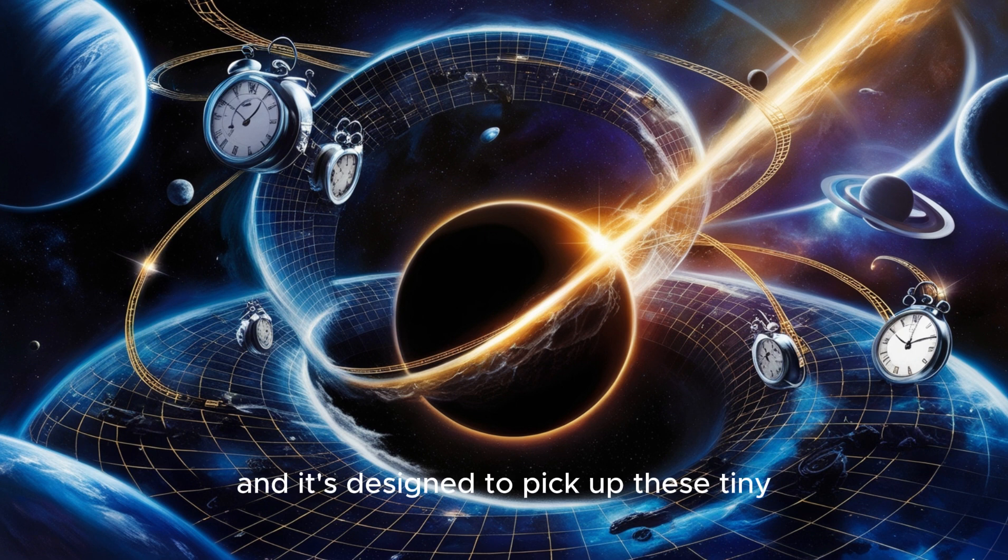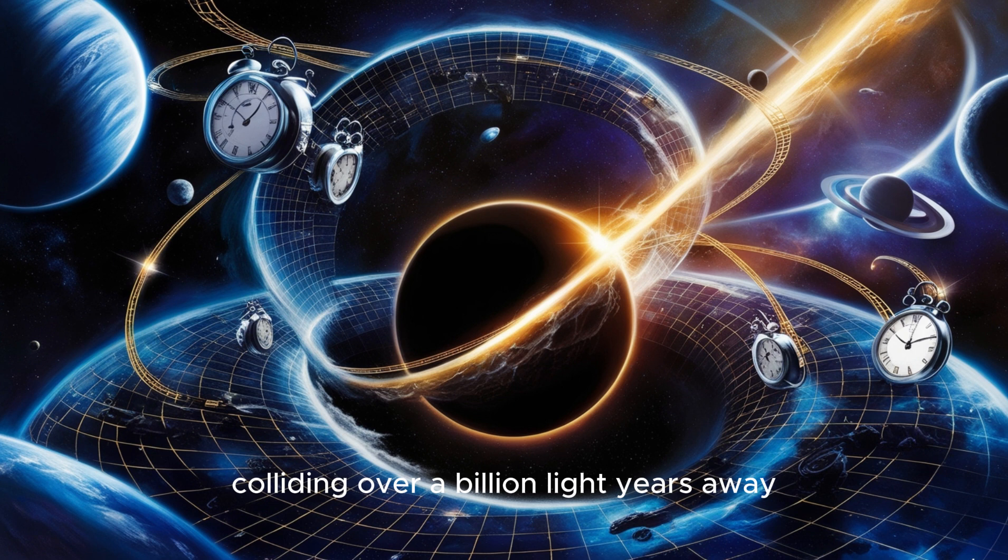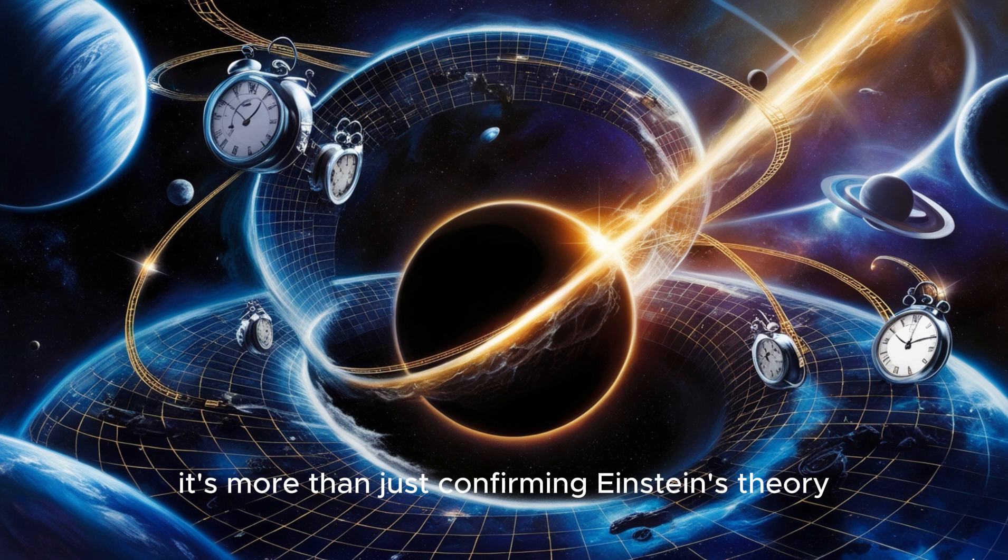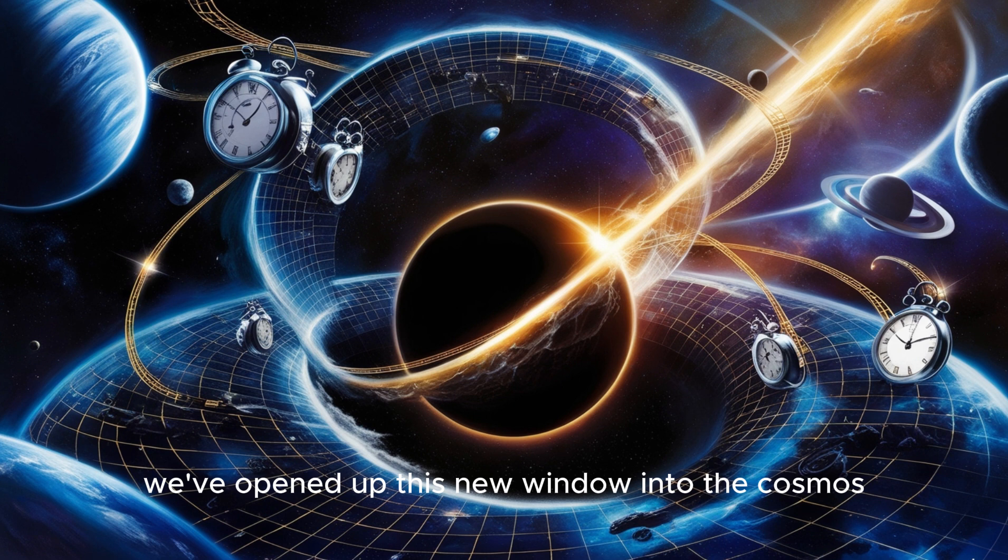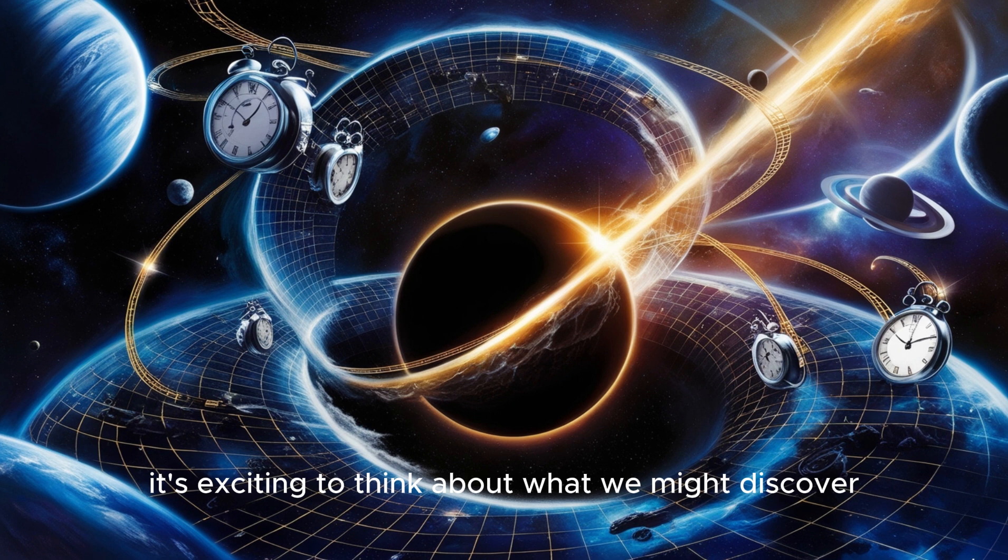And we actually built instruments to try and detect these waves. Yep, we built LIGO, the Laser Interferometer Gravitational Wave Observatory. That's a catchy name. And it's designed to pick up these tiny distortions in space-time caused by gravitational waves. And it worked. LIGO detected these waves from two black holes colliding over a billion light-years away. I know, it's incredible. It's more than just confirming Einstein's theory. It's like a whole new way to study the universe. Exactly. It's like we've opened up this new window into the cosmos, this gravitational wave astronomy. It's still a very young field, but it has so much potential.